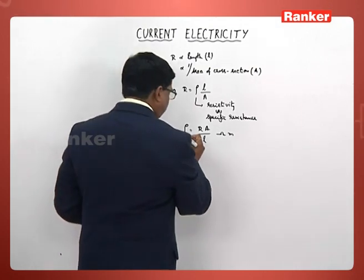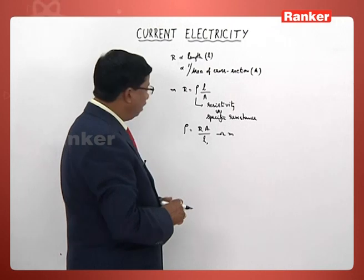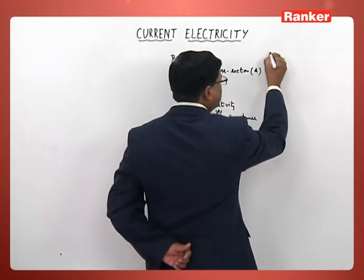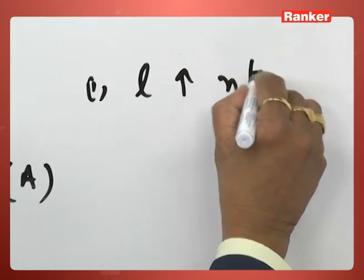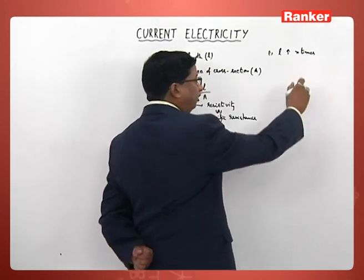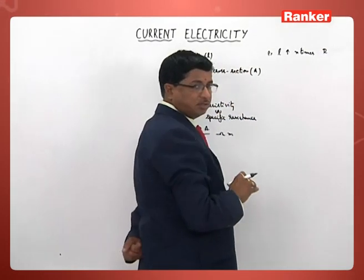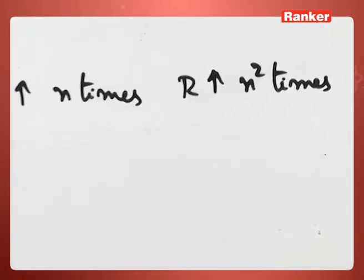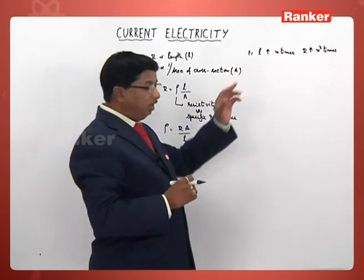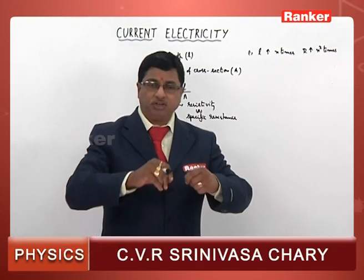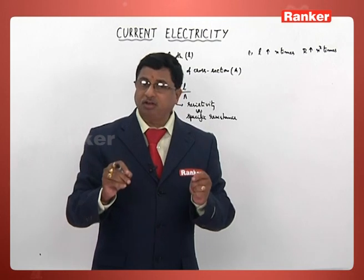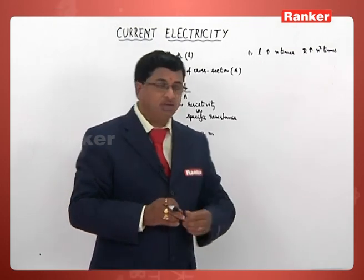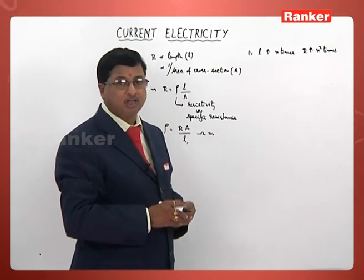By changing the length and area of cross-section, resistance varies accordingly. If length increases by n times (by stretching), the area of cross-section becomes 1/n of the original value, so resistance becomes n² times. Likewise, if area of cross-section is increased by n times (by compressing), the length becomes 1/n times, so resistance becomes 1/n² times. If the radius of cross-section increases n times, the area increases n² times, length becomes 1/n² times, and resistance becomes 1/n⁴ times.